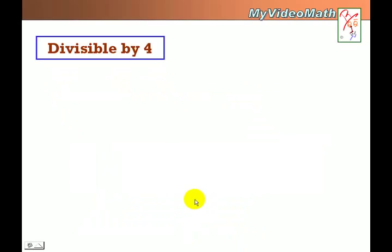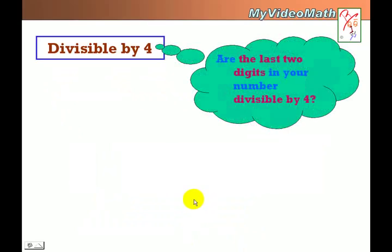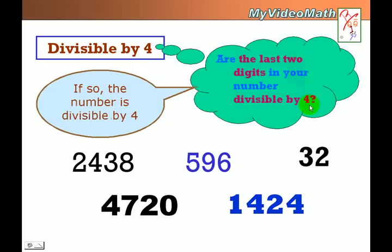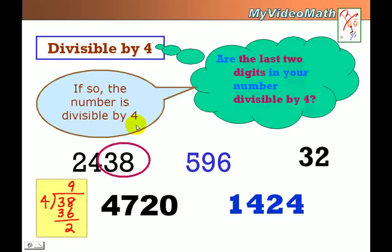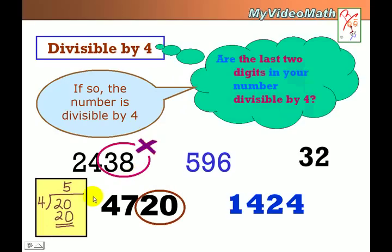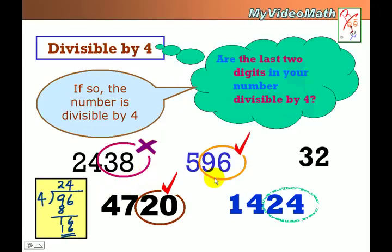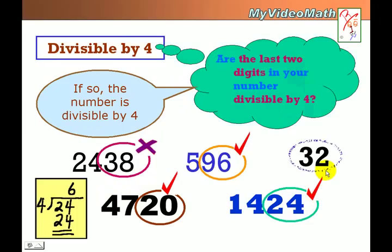Divisible by 4. We need to look at the last 2 digits in the number. If the last 2 digits are divisible by 4, then the whole number is divisible by 4. But 38 is not divisible by 4, so it's not divisible by 4. 96, 24, and 32 are.